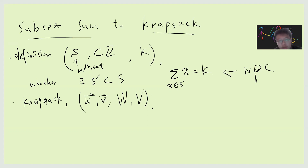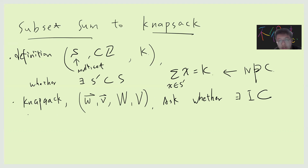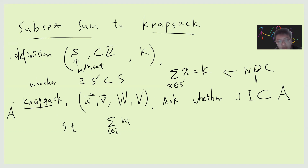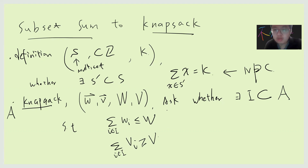The decision version asks whether there is a subset I of items — let's say the total number of things is called A, a multi-set — such that I is a subset of A, and for every item you choose, the total weight is less than or equal to W, and all the value in the item is greater than or equal to V.